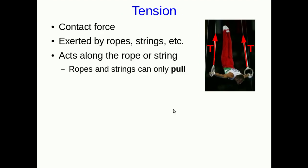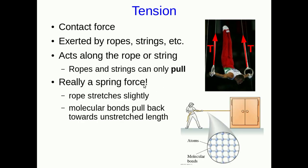Tension is another contact force exerted by ropes, strings, straps, and similar things. It acts along the line of the rope or string, and it can only ever be a pull — you can't push anything with a rope. Interestingly, tension is really a spring force: when you pull on a rope it stretches slightly, the molecular bonds pull back towards the unstretched length, so a tension can have basically any value depending on how hard you pull. We represent tension with a capital T.